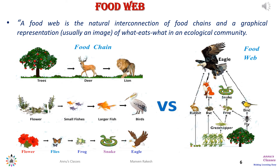A food web is a natural interconnection of food chains — a graphical representation of what eats what in an ecological community, as shown here. A food chain is a straight-line graph, whereas a food web is a branched structure representing the interconnections between various food chains.